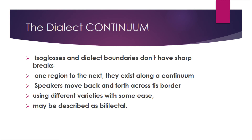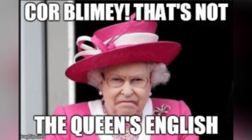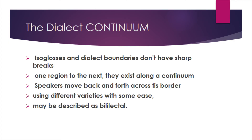Isoglosses and dialect boundaries don't have sharp breaks from one region to the next. They exist along a continuum. Speakers who move back and forth across this border using different varieties with some ease may be described as bidialectal.